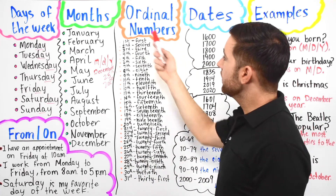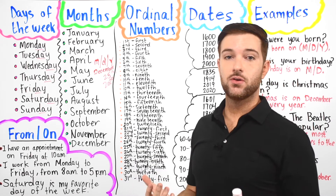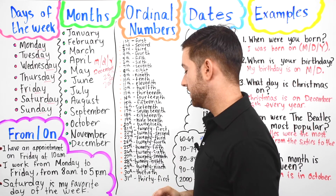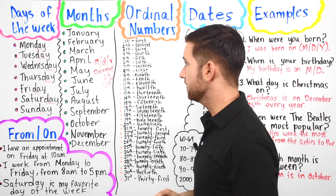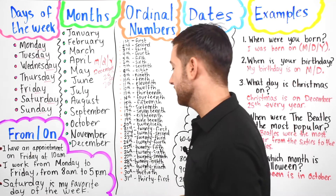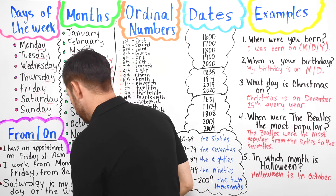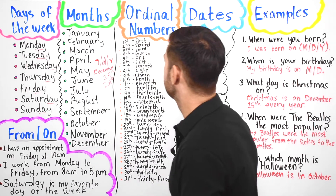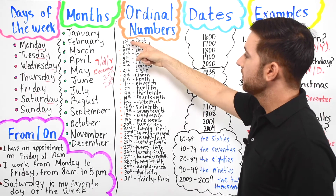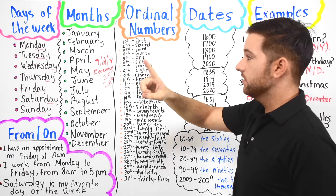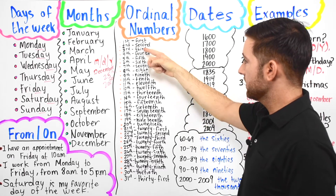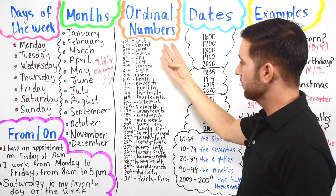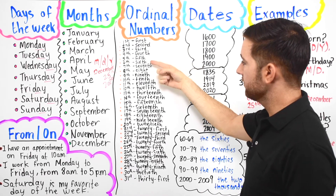Let's move on to ordinal numbers. We use ordinal numbers in the United States for telling time and using them with months and days. With one you say first, with two you say second, with three you say third, with four you say fourth, with five you say fifth.